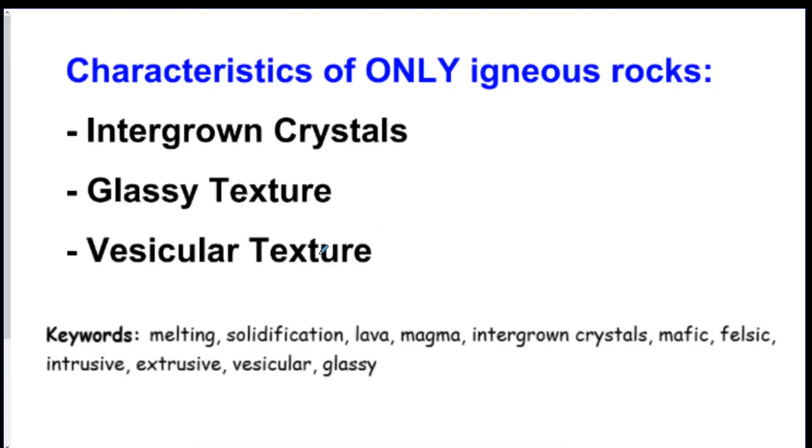So I have a couple of random facts for each type of rock that you should probably know. These are the three for igneous: they have intergrown crystals, glassy texture, and vesicular texture. Remember, vesicular means gas pockets. These are the only characteristics for igneous. These are not characteristics for either of the other two rocks. So if you see these words, it's igneous.